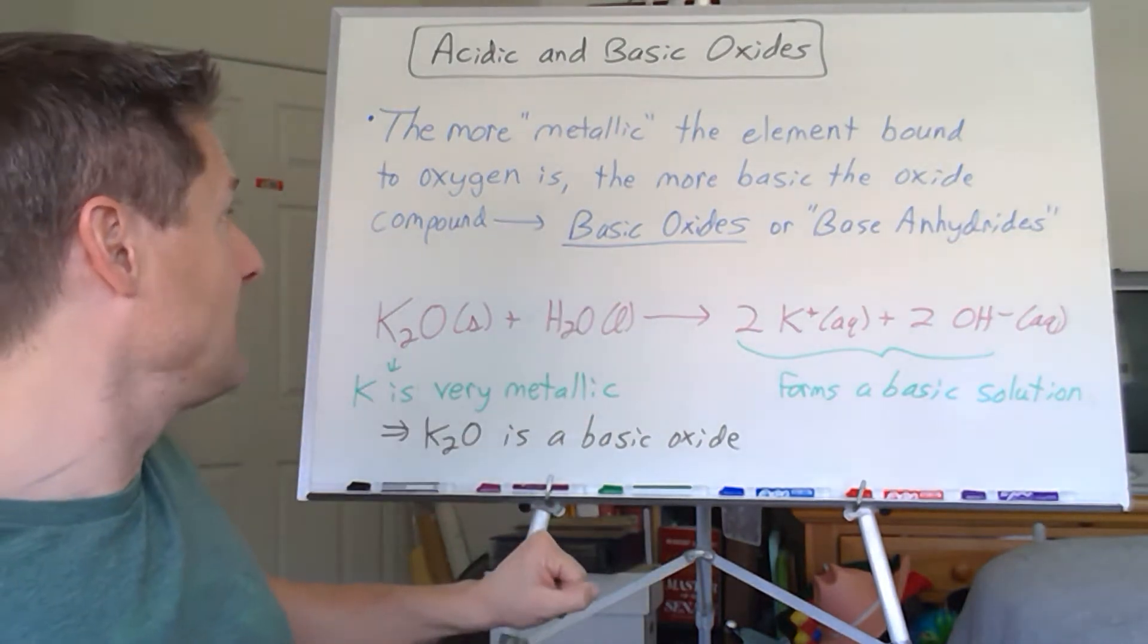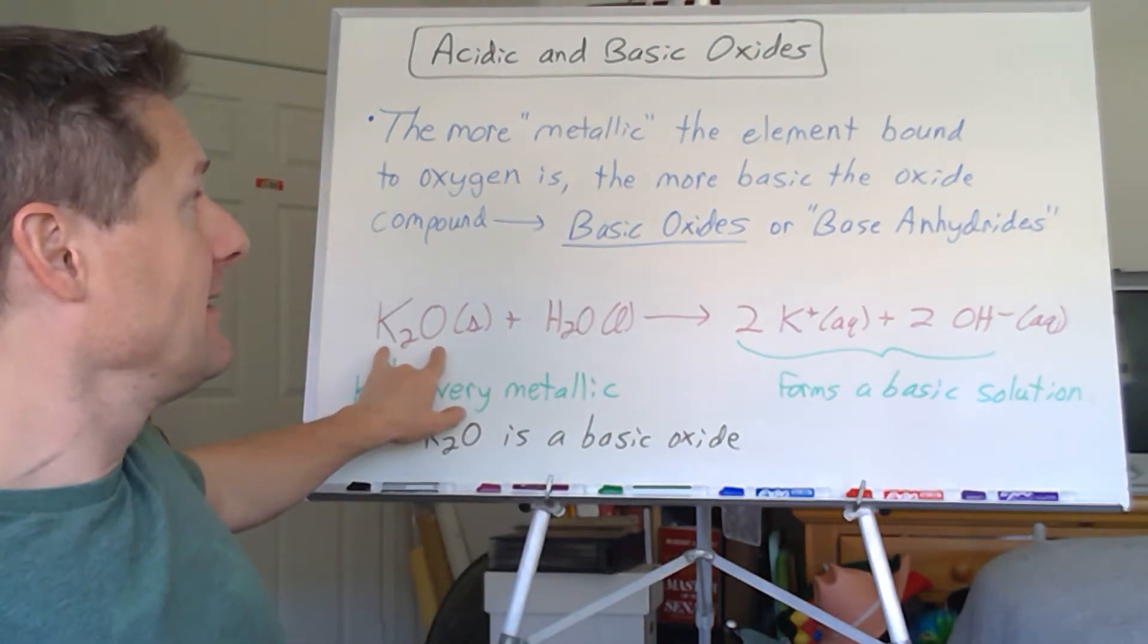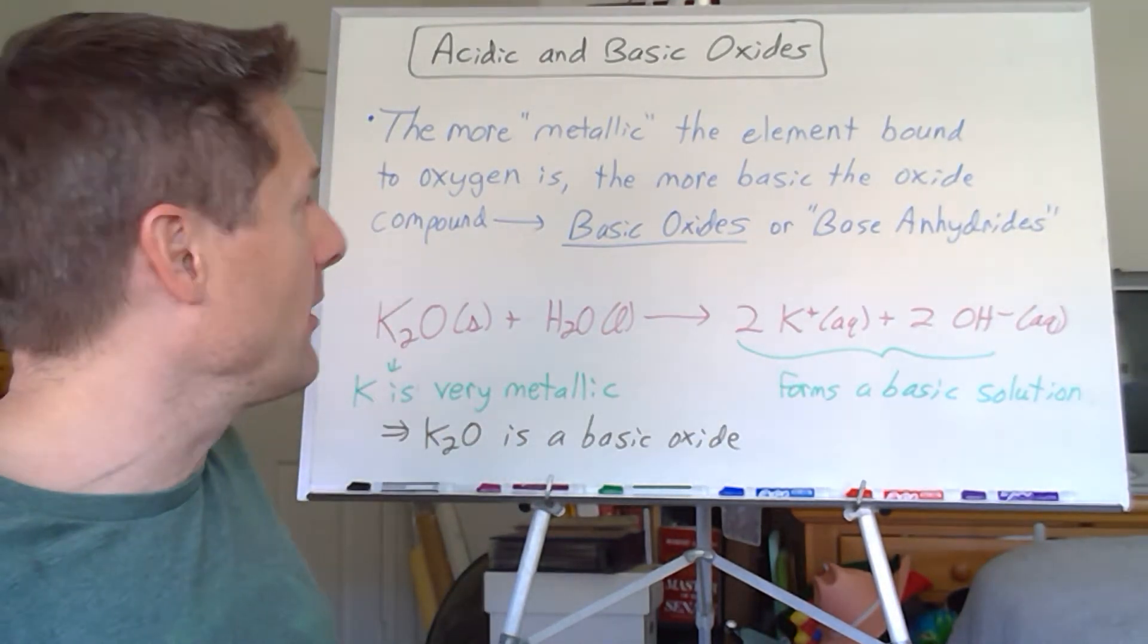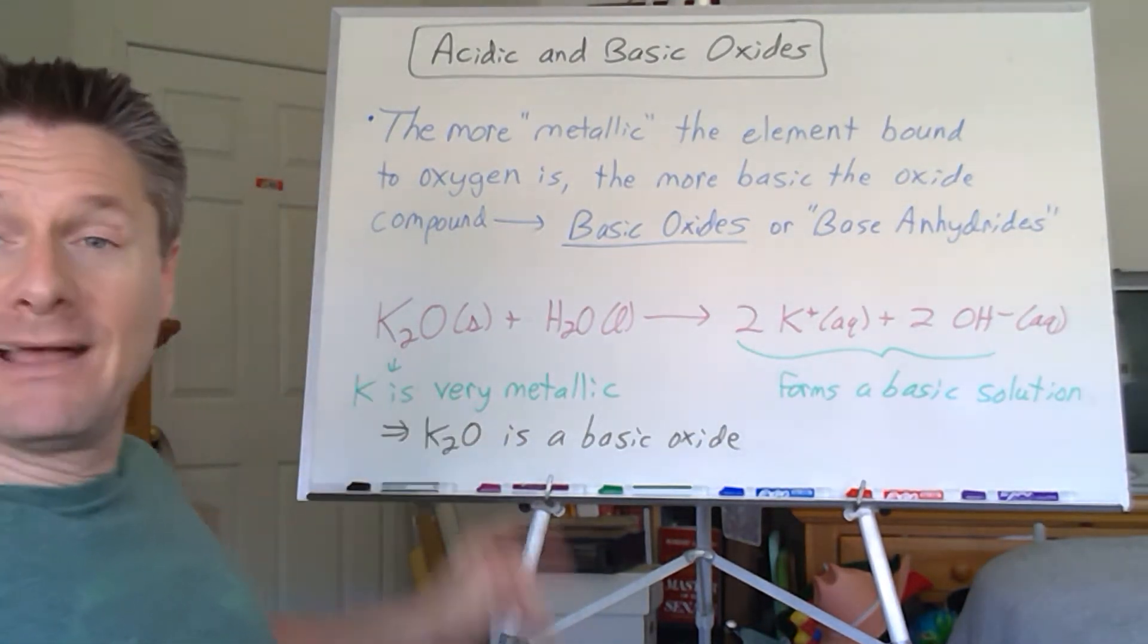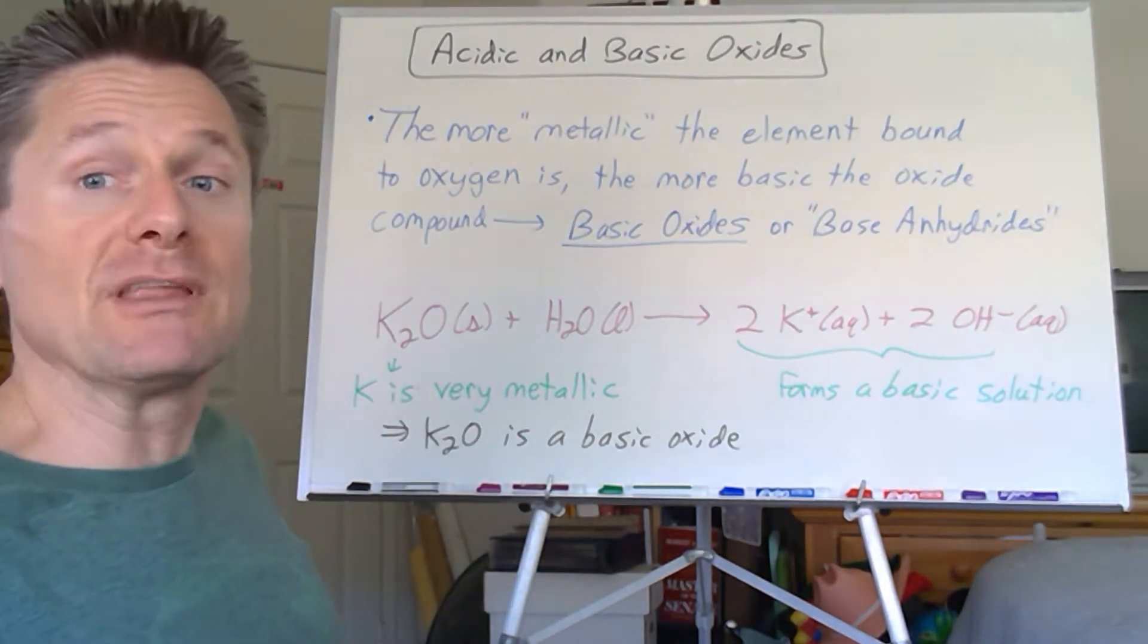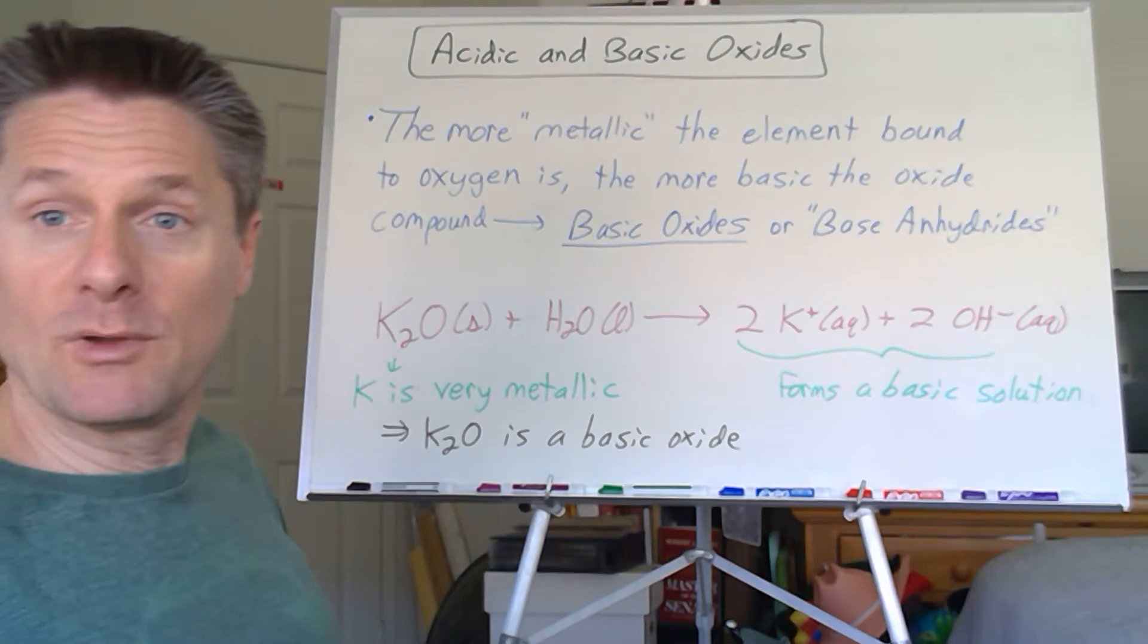So these are called basic oxides, or it's the base without the water yet. So this is the base anhydride or basic anhydride. So because potassium is very, very metallic, we'd expect that to be pretty strongly basic in water. We predict it that way.